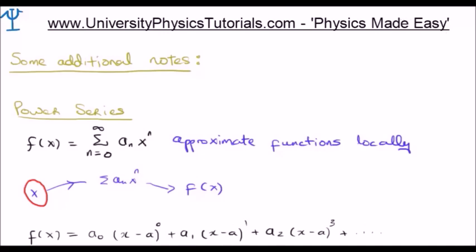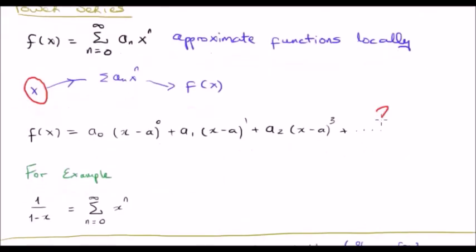So a typical power series would look like the following. If you want to represent f of x you would have the coefficients the a sub n so you have a0 times x minus a to the 0 plus a sub 1 x minus a to the 1 and so on. The a just allows us to shift along the axis by a factor of a so that should be nothing new to you. For example if we divide 1 by 1 minus x we get the infinite power series from n is equal to 0 to infinity of x to the n.